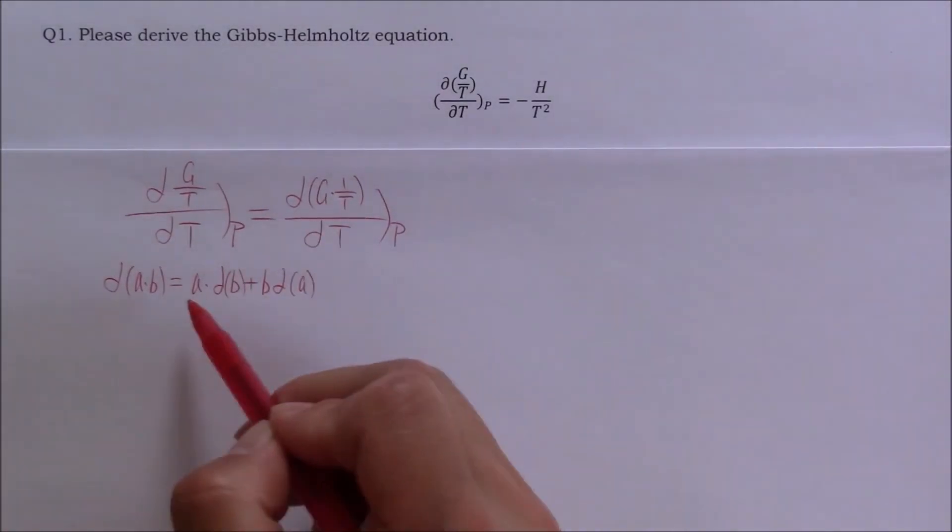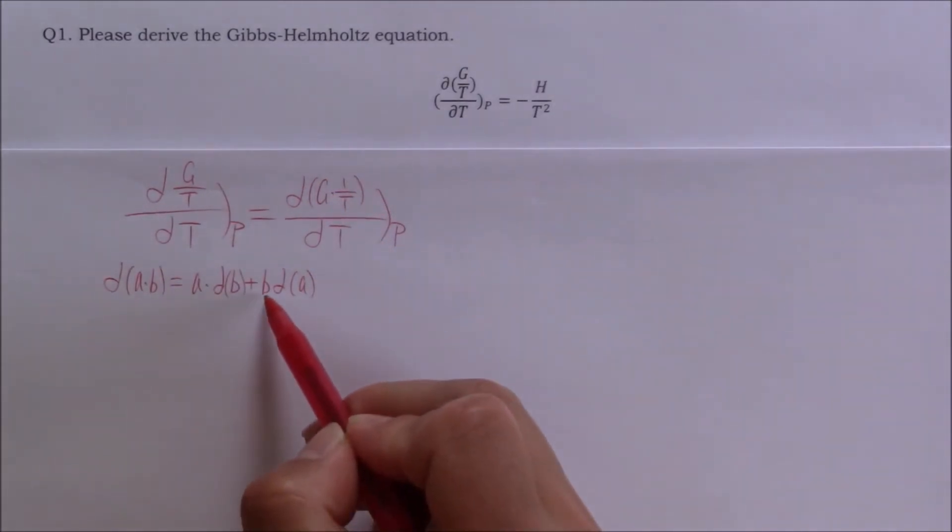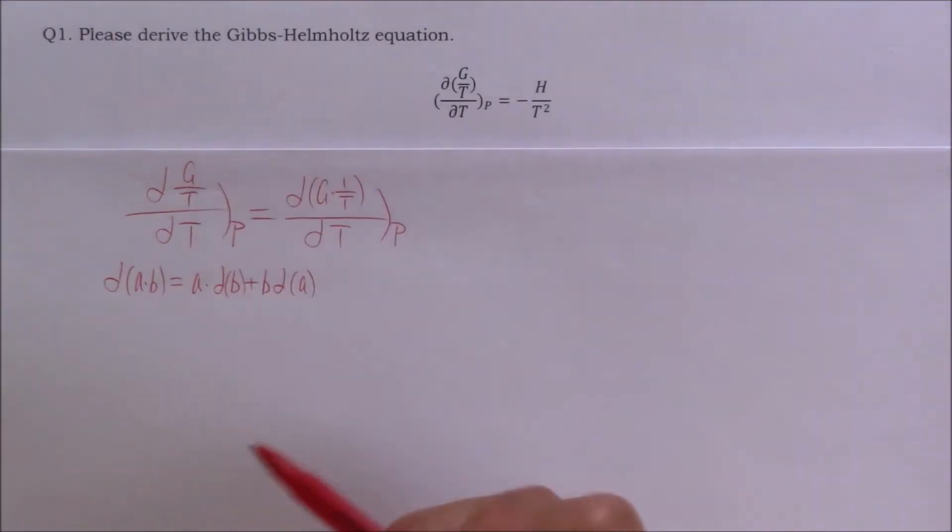g is a in this equation. 1 over T is b in this equation. Then let's rewrite this partial derivative.